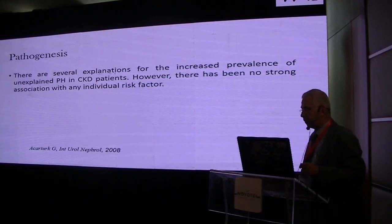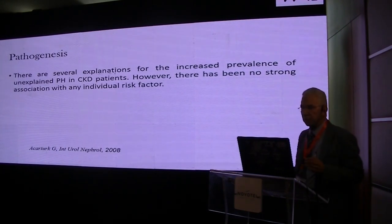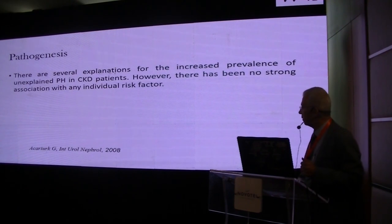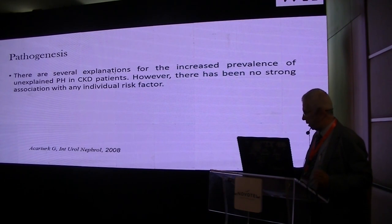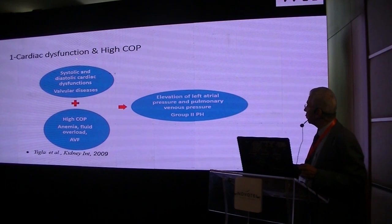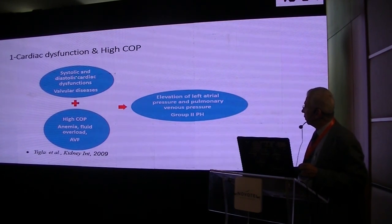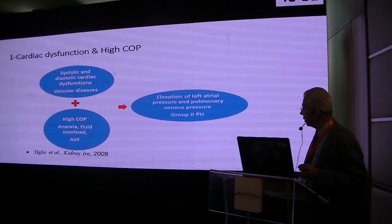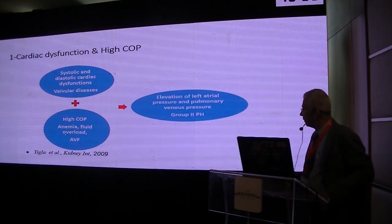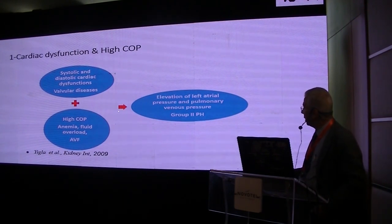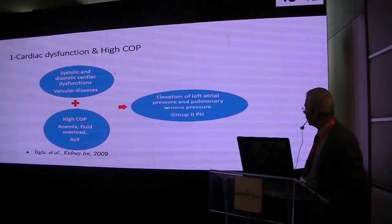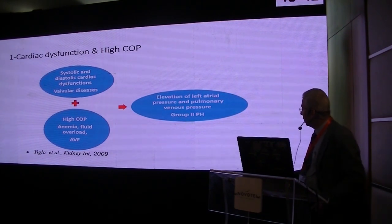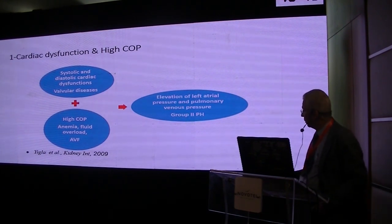The pathogenesis of pulmonary hypertension among chronic kidney disease is still unclear, and many mechanisms can be involved. For example, cardiac dysfunction and high cardiac output — systolic and diastolic cardiac dysfunction in valvular diseases, or high cardiac output in anemia, fluid overload, or arteriovenous fistula — may induce elevation of left atrial pressure and pulmonary venous pressure. This is like Group 2 pulmonary hypertension.